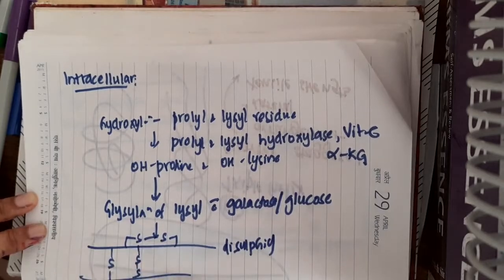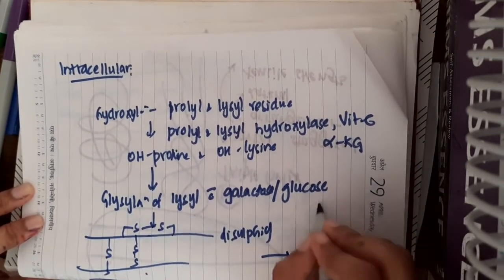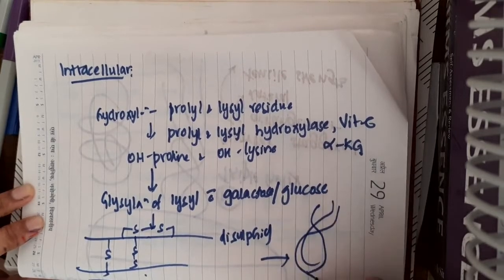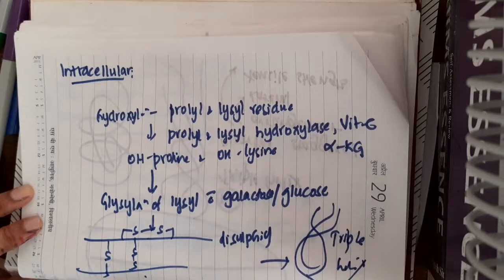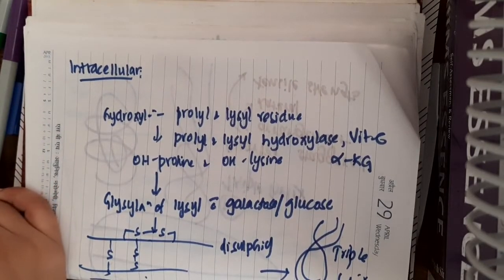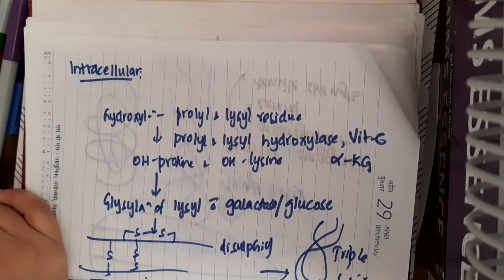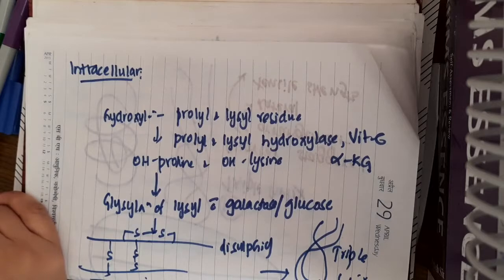And finally, with these three alpha helixes will form a triple helix at the end. So these are the events which occur intracellularly. Then, thus a collagen triple helix is formed.